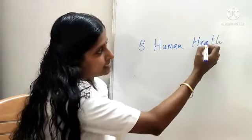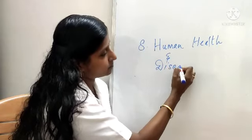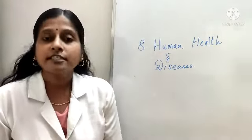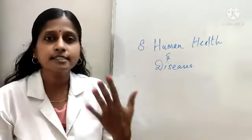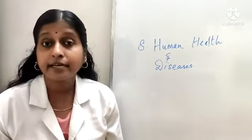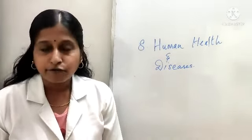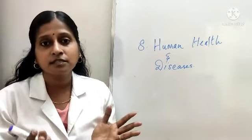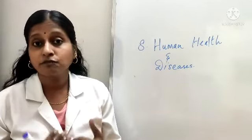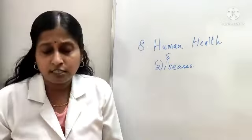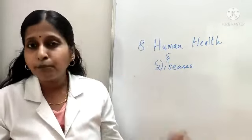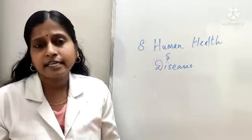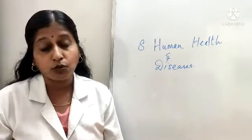Chapter 8 is Human Health and Diseases. When you see this chapter, it is actually a reading chapter. If you read, you understand very clearly. But there are a lot of new technical terms which you have to memorize, learn, and keep in mind. This chapter covers health, immunity, immunization, vaccination programs, different conditions, different diseases, drugs, alcohol, and abuse.